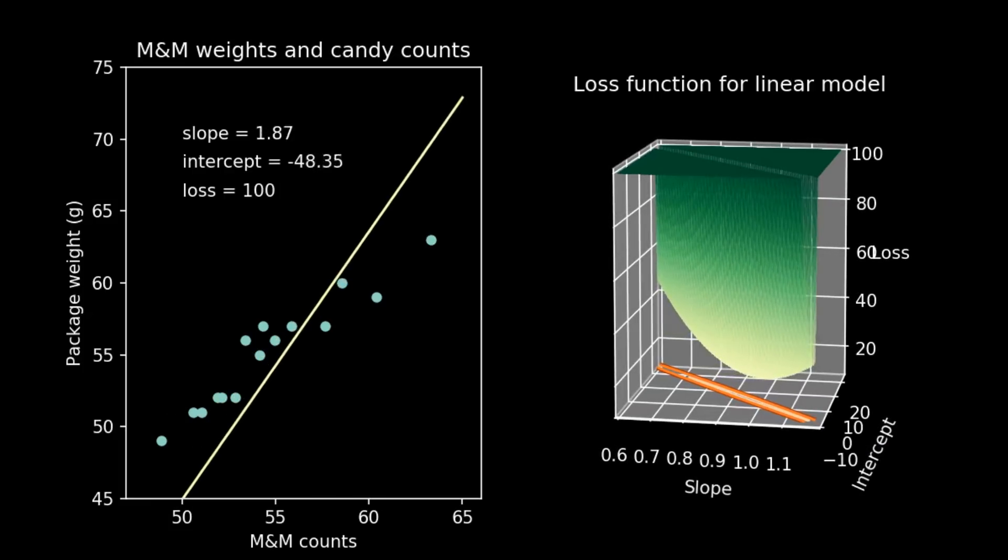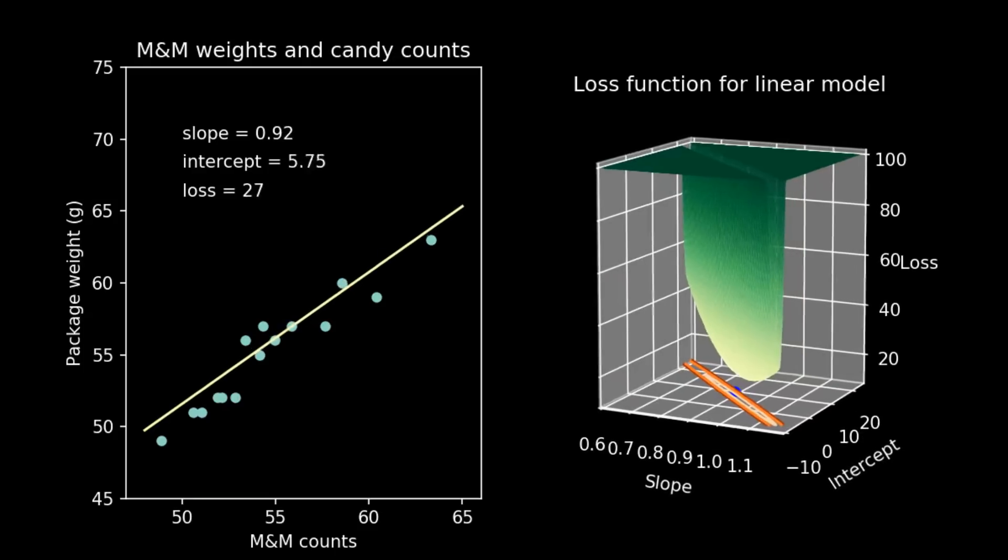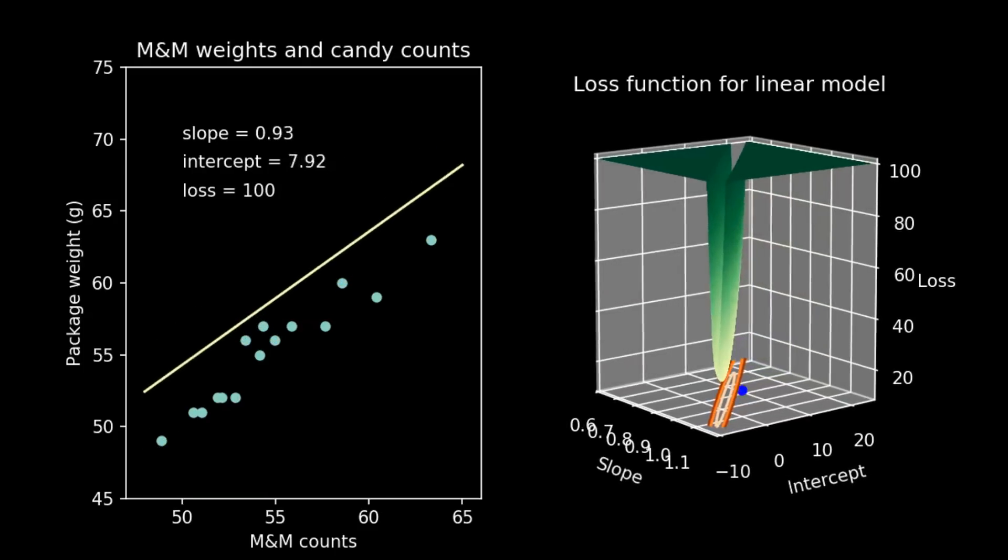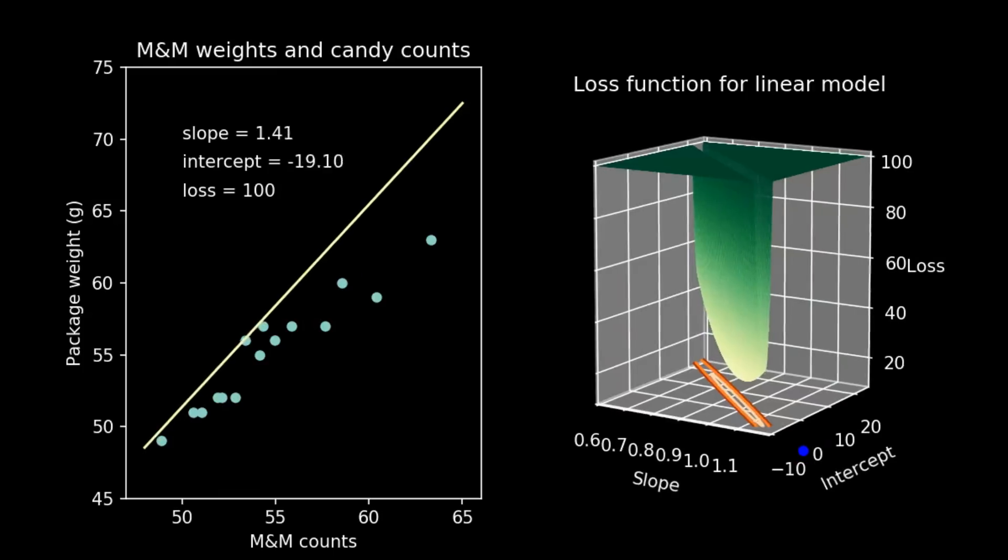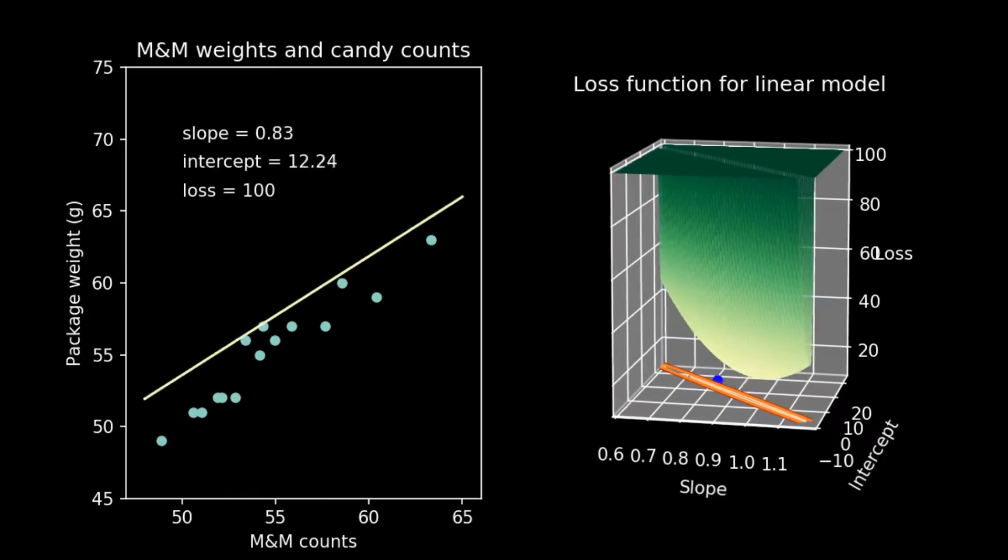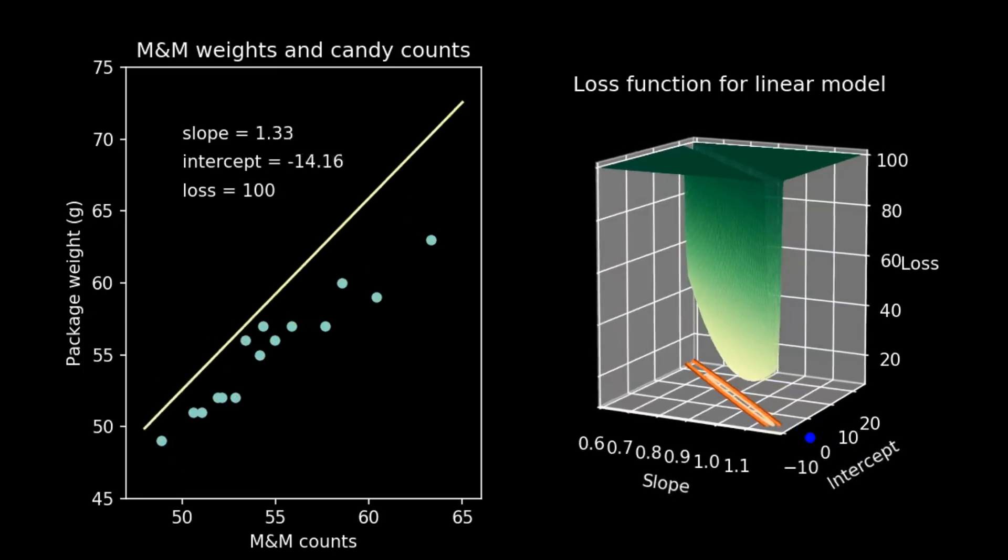At this point, it's probably clear what needs to happen. Our point in parameter space needs to roll down to the bottom of the bowl until it finds the deepest part. This is exactly what gradient descent does for us.